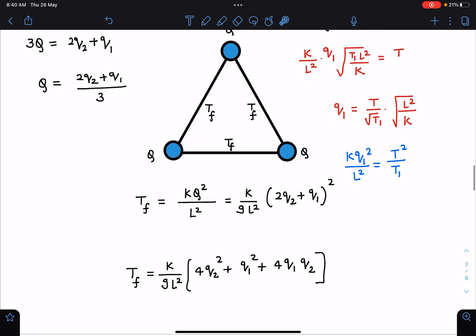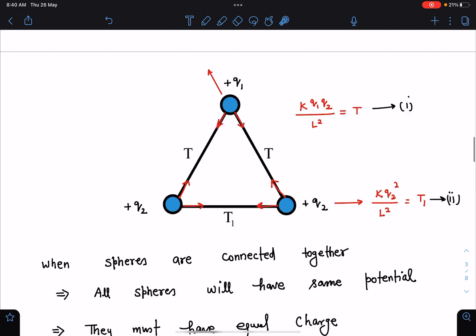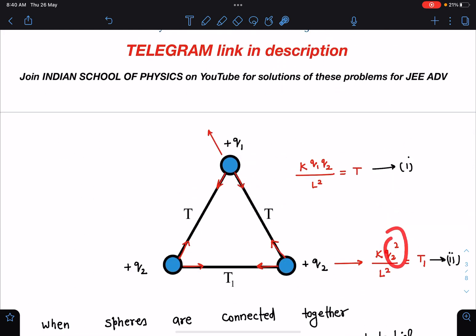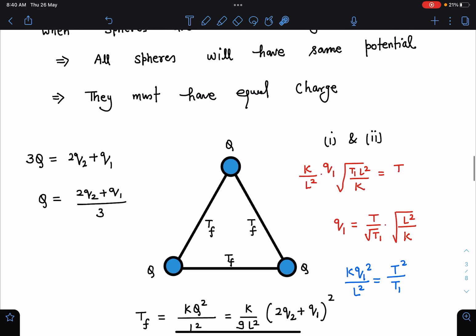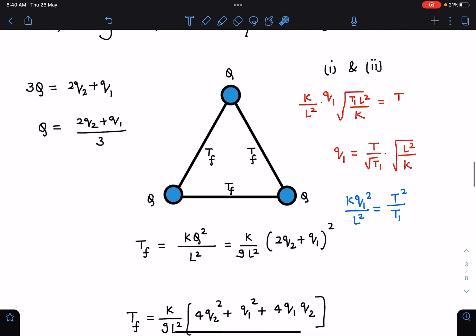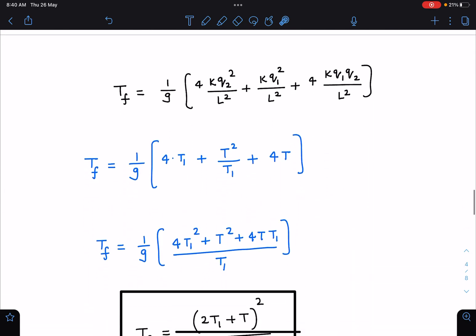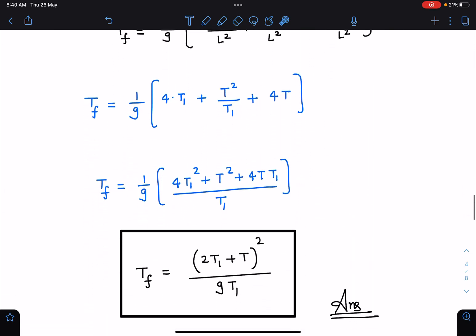When I simplify this you can see Q2 square directly I am going to get from here and Q1 Q2 term also I am going to get directly from this part. KQ1 square by L square I am going to get T square by T1. Let us substitute these values here and simplify. I am going to get this final tension in the string as 2T1 plus T whole square divided by 9 T1.